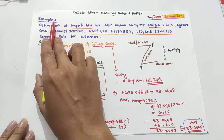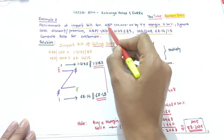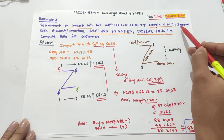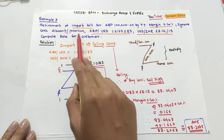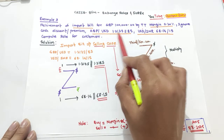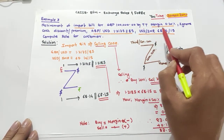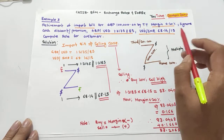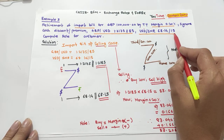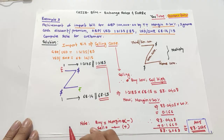This is Example 3 from your Macmillan book. It says: retirement of an import bill for GBP (Great Britain Pound) 1 lakh, with a TT margin of 0.20%. Ignore cash discount and premium. GBP/USD is given as 1.2175 and 1.2185, and USD/INR is given as 68.14 and 68.15. We have to compute the rate for the customer.